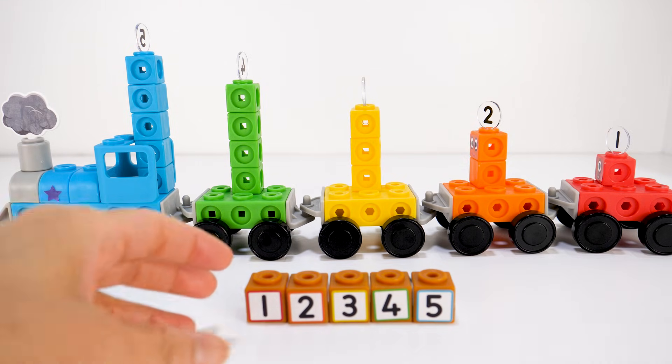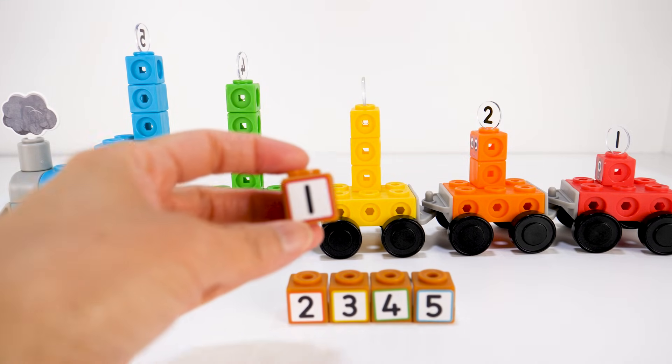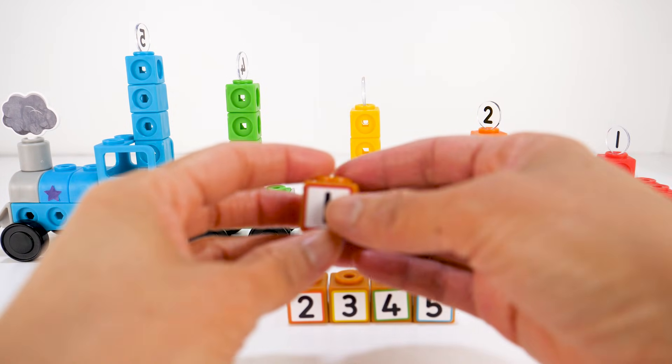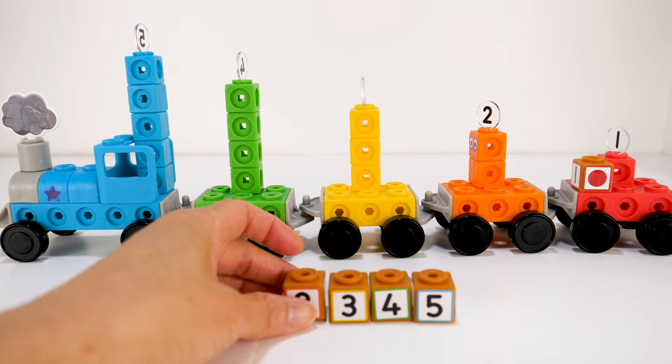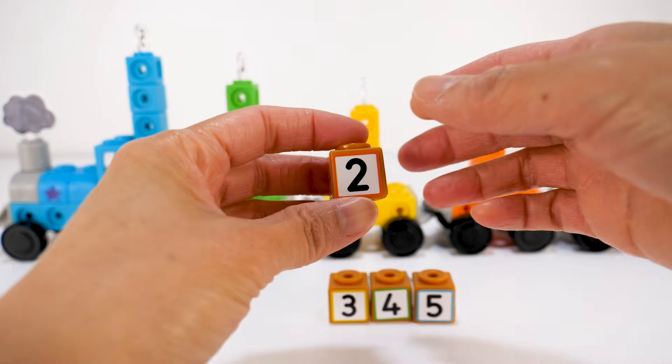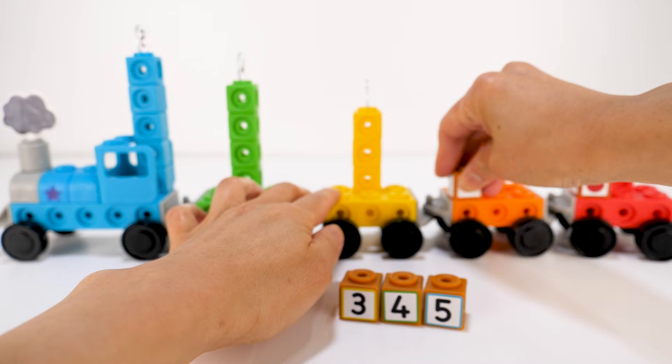Now it's time to load the cargos. Cargo one has the number one on it, so it goes with number block one. Cargo two has the number two on it, so it goes here with number block two.